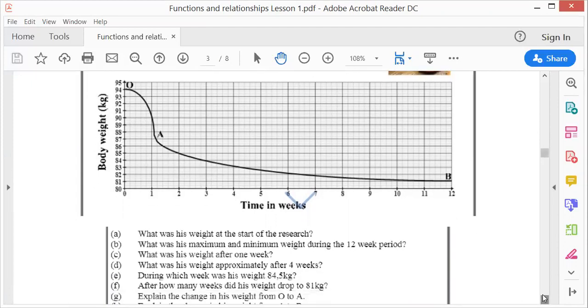Right. During which week was his weight 84.5? 84.5 is about there. I go up and down. So it's there. Just after two weeks. That means it was just after two weeks, so it's within the third week. Because you can't say second week. It's already gone. There's the first week, second week. So it must be within the third week.